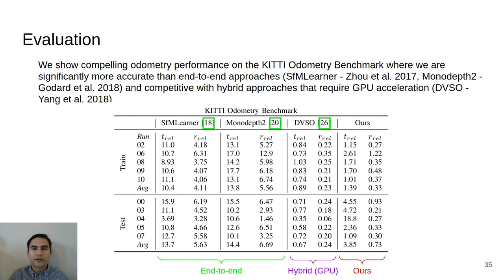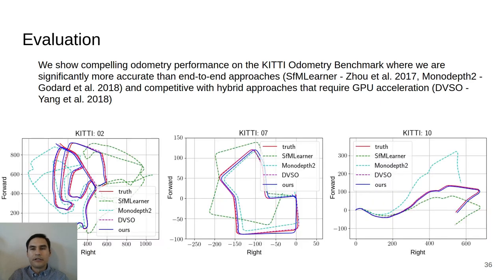In the plots here, our approach, the blue trajectory, tracks the ground truth in red very closely, as closely as the nearest competitor, DVSO, in dashed purple, which requires significantly more computation.